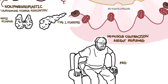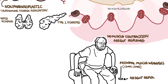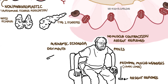Lambert-Eaton Myasthenic Syndrome presents with proximal muscle weakness, mainly in the lower limbs, absent reflexes, ptosis, and autonomic disorders including dry mouth, sluggish pupils, and erectile dysfunction.